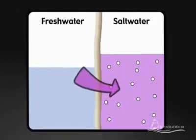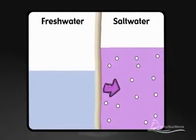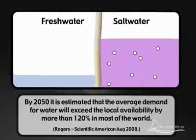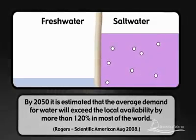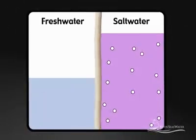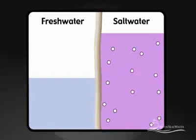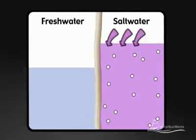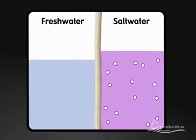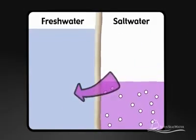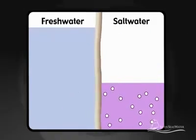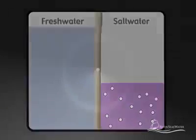In nature, the direction of flow through the membrane is from a less concentrated solution, such as freshwater, to a more concentrated solution, such as seawater, until equilibrium is reached. Reverse osmosis is when the opposite occurs. By pressurizing the concentrated solution — the seawater — we are able to force water molecules to pass from the salty seawater solution through the membrane to the freshwater.